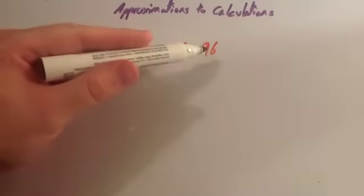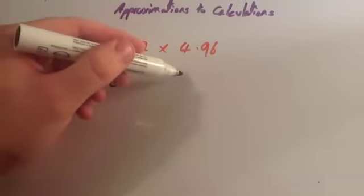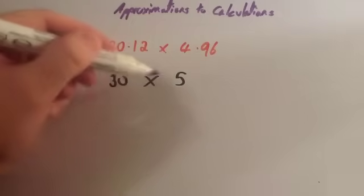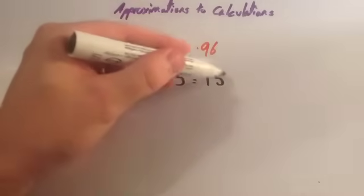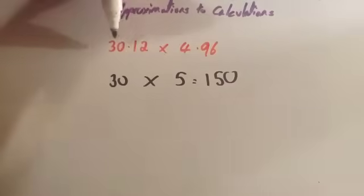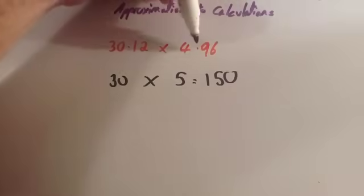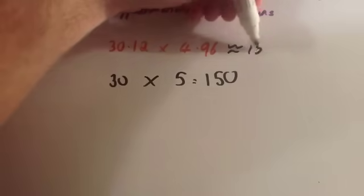And 4.96, well, one significant figure, let's round that to 5. And 30 times 5 would be 150. So, 30.12 multiplied by 4.96 is approximately 150.